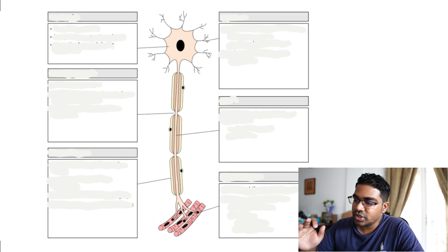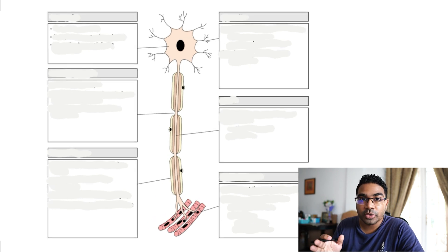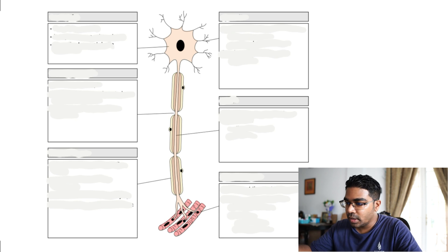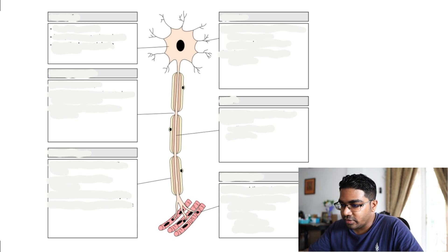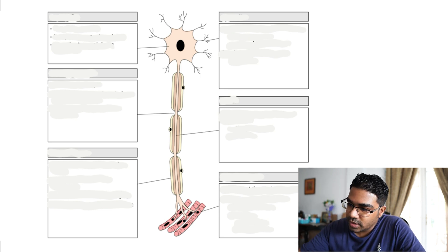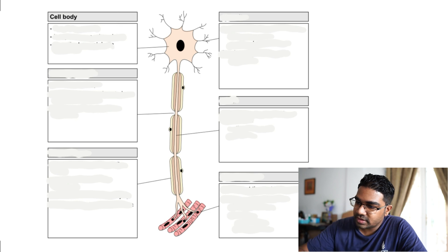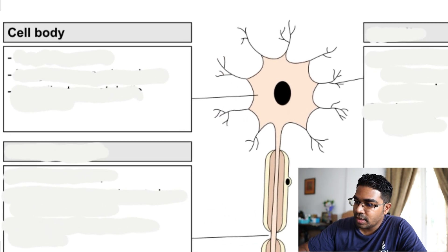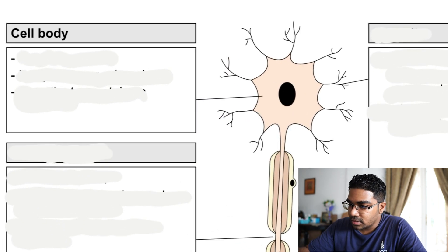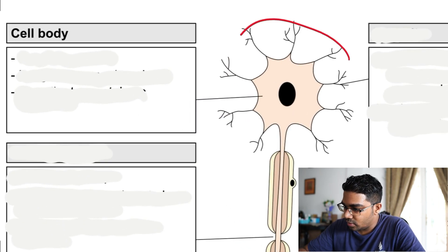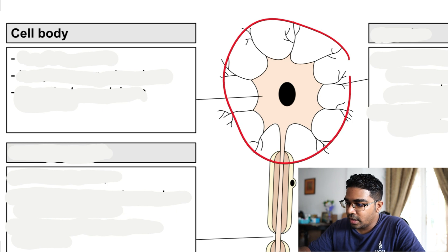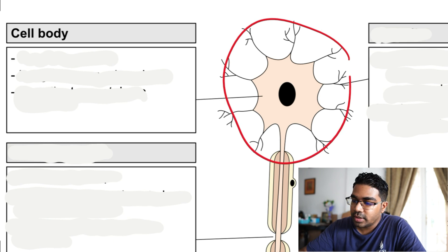What you are seeing in this picture is actually a motor neuron. Let's look at it generally. First, we have this part here, which is the cell body. The cell body is this whole thing, and as you can see, it contains the nucleus.